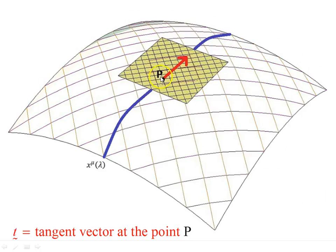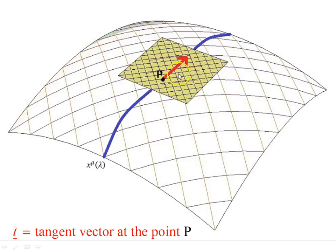Consider some point p on the curve. The tangent vector to the curve at that point is shown in red, and it lies in the tangent plane touching the manifold at that point. The tangent plane is flat and spreads in both the x1 and x2 directions. At and near point p, the manifold looks approximately Euclidean — the further away we move from p, the less Euclidean it looks. The tangent plane represents this local approximately-Euclidean region.